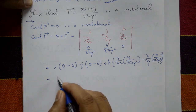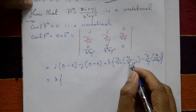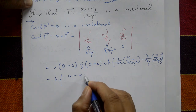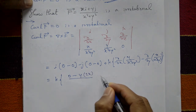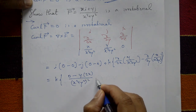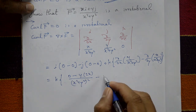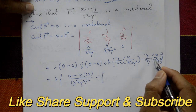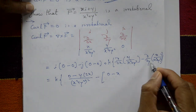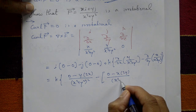Applying the quotient rule (u/v form) for each partial derivative: differentiating y/(x²+y²) with respect to x gives 0·(x²+y²) minus y·2x, divided by (x²+y²)². Differentiating x/(x²+y²) with respect to y gives 0·(x²+y²) minus x·2y, divided by (x²+y²)².